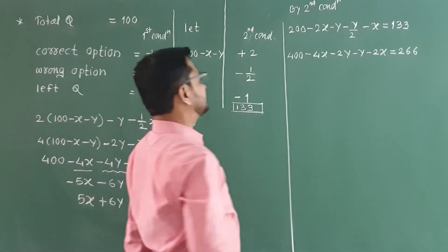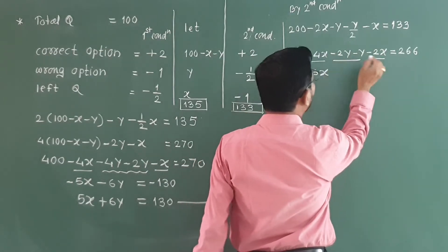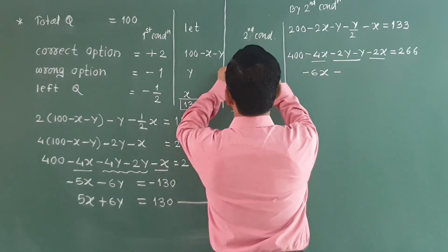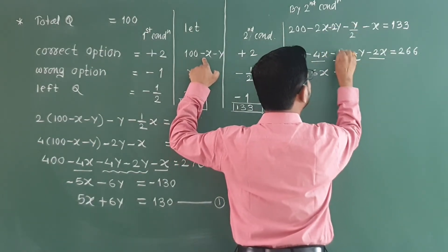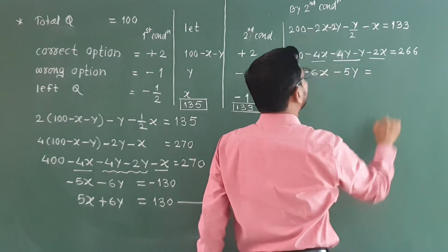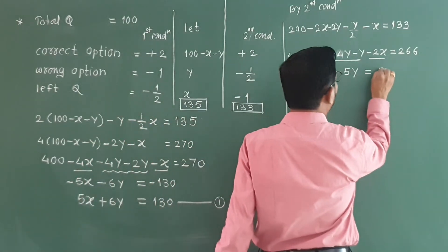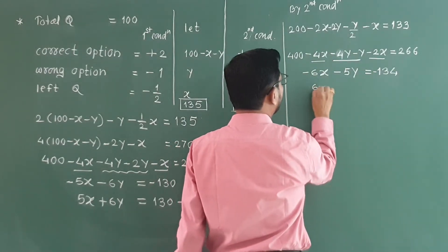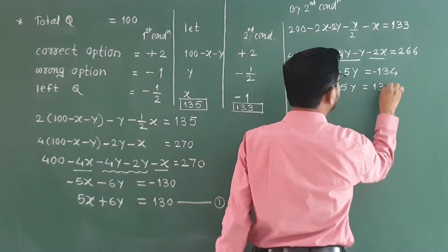Okay, so minus 4x minus 2x is minus 6x. Minus 2y minus y is minus 3y. Minus 5y is equal to 266 minus 400, minus 134. Minus minus, we cancel. We get 6x plus 5y is equal to 134, equation number 2.